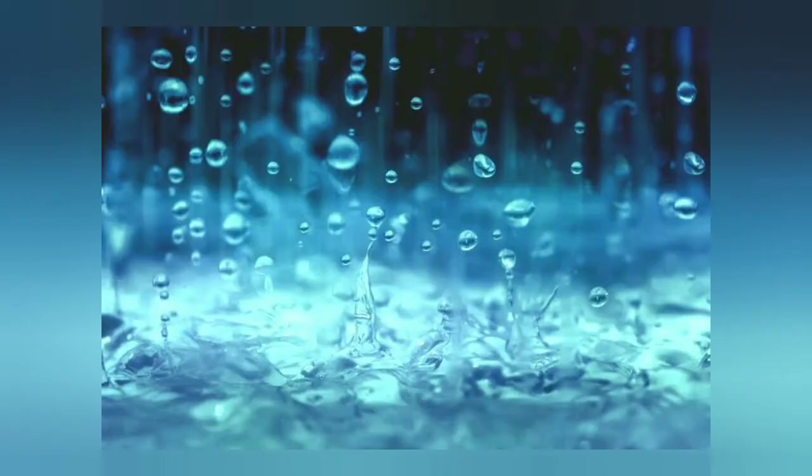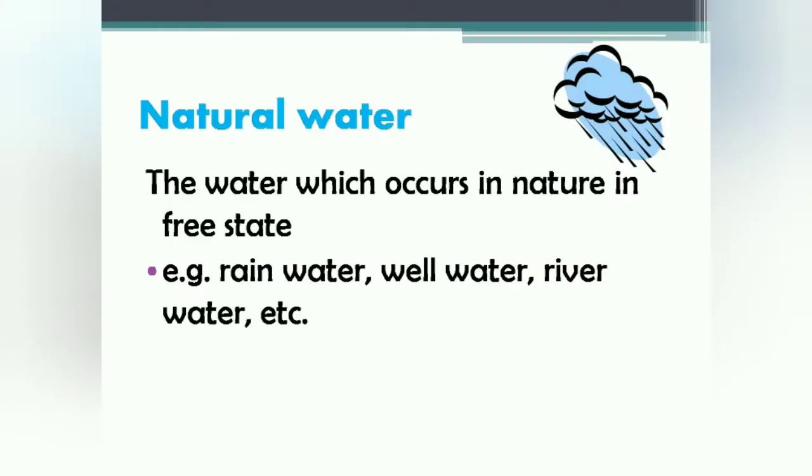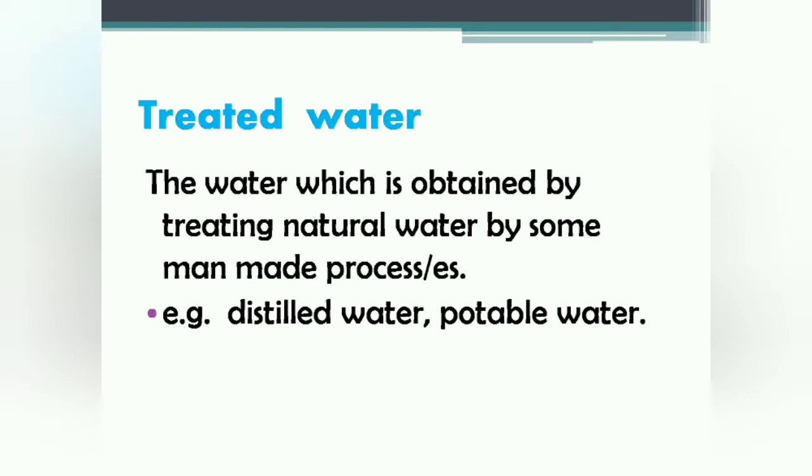Everyone knows that water occurs naturally in rain, rivers, sea, etc. But do we drink this water? No, we drink filtered water which is obtained by treating the naturally occurring water. The water which occurs in nature in free state is called natural water and the water which is obtained by treating natural water by manmade processes is called treated water.